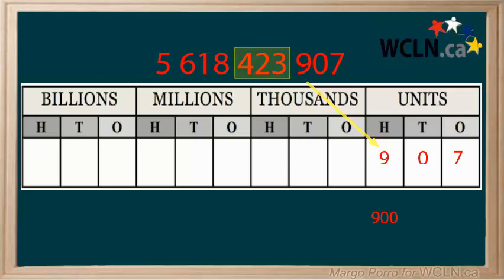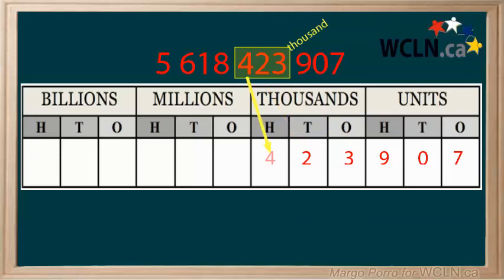The next group of three numbers is all in the thousands period. Read the group of three together, followed by the word thousands, like this: 423,000. What does the digit three stand for? Three thousand, so it goes in the thousands place. Two is in the ten thousands place, so it stands for 20,000. What is the value of the four? The four has a value of 400,000.